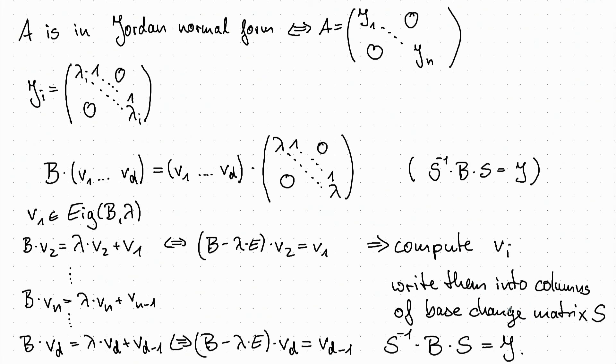So if we have more than one Jordan block, namely if we have more than one vector in the eigenspace or more eigenvalues and then we have more different eigenvectors, then we can do this procedure for every block in the Jordan normal form or every eigenvector in the eigenspaces and just write them next to each other into the base change matrix S.